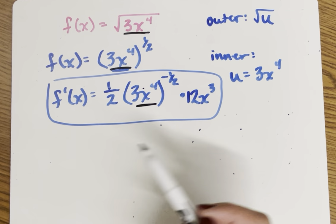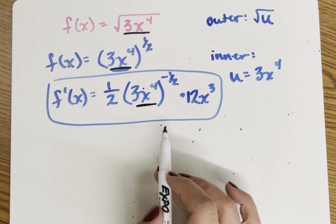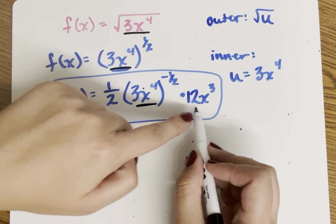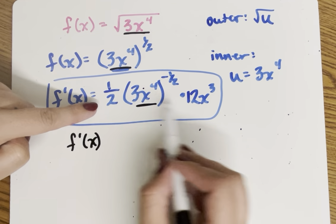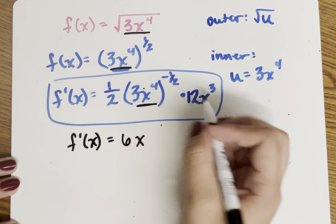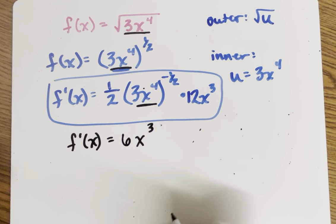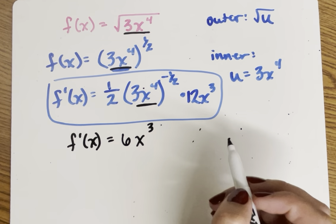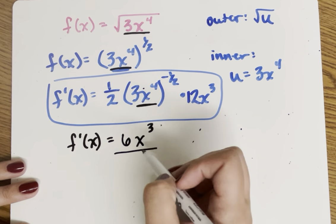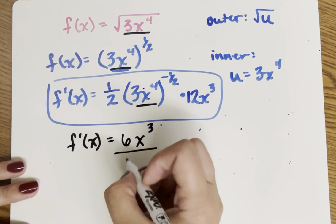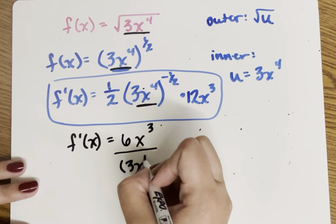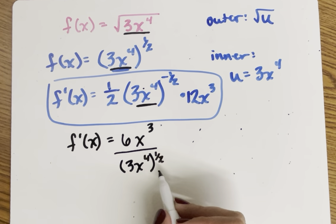In order to write this in simplified radical form, I'll rearrange things. I can pull this 12 to the front and multiply one half times 12, which is 6. And then I have x cubed. I'm going to take this negative exponent and put it in the denominator instead, so I have 3x to the fourth all being raised to the one half.